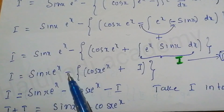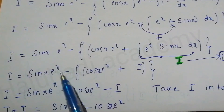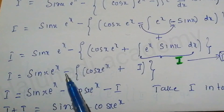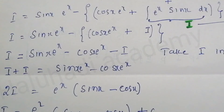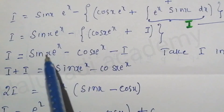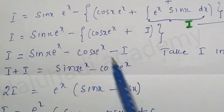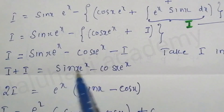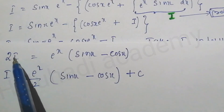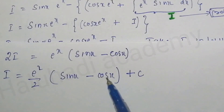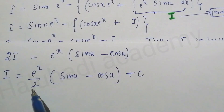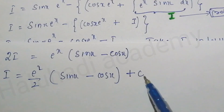Taking i to the left-hand side: i + i = sin x · e^x minus cos x · e^x. That gives 2i = e^x (sin x minus cos x). Dividing both sides by 2: i = e^x / 2 · (sin x minus cos x) + C, where C is the integration constant.